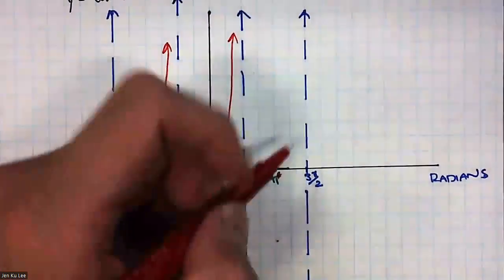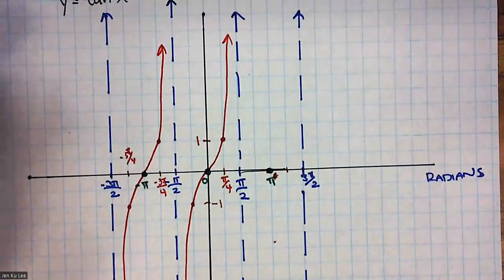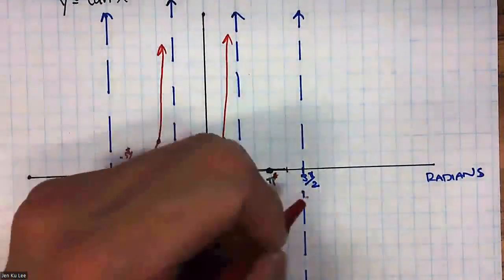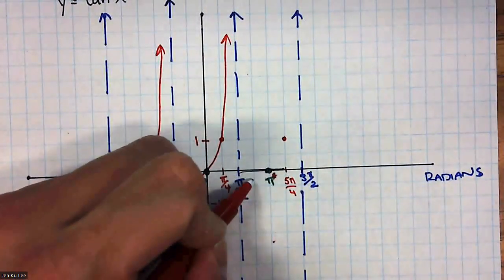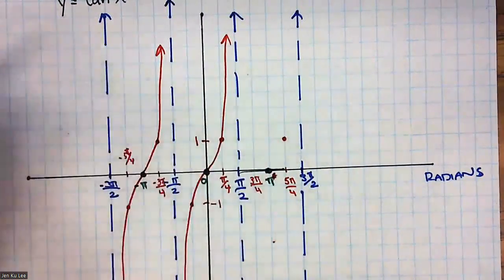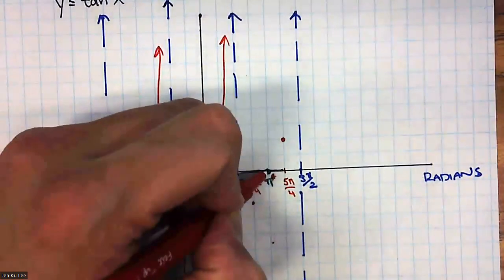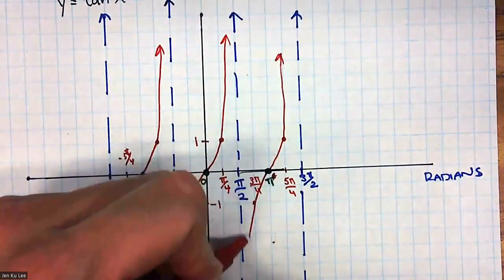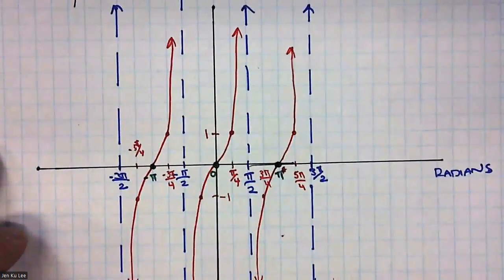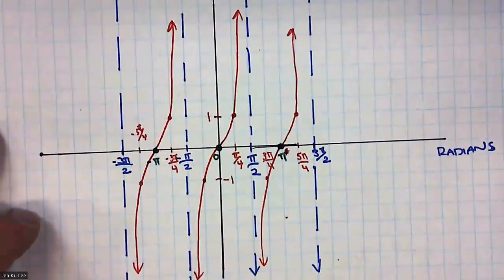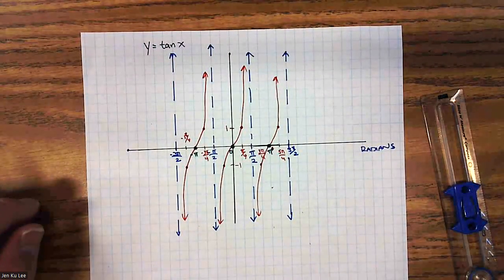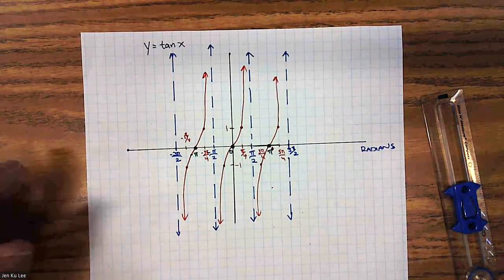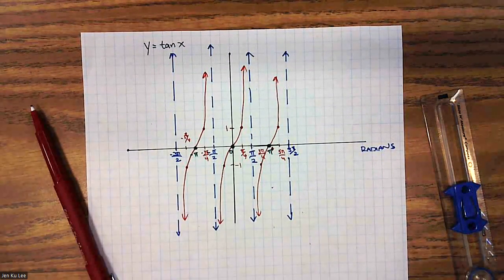So that is your tangent function in a nutshell. You graph your vertical asymptotes, plot the zero-crossings and the ±1 points, then draw out that repeating curve. In practice, what we're going to do is vertically stretch it, move it side to side, or move it up and down — that's about it.